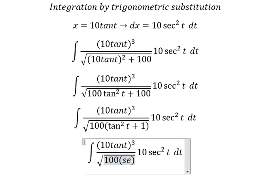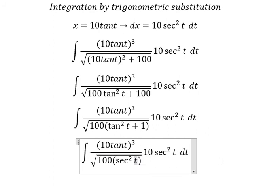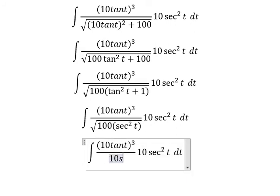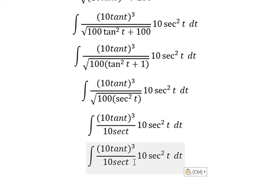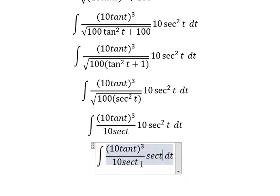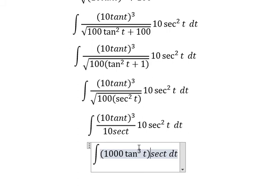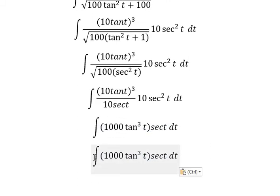Inside we have sec²(t). The square root of 100 sec²(t) gives us 10 sec(t). Now we simplify 10 sec(t) on the numerator and denominator. After simplification, this becomes 10 sec³(t). I can put the constant 1000 outside the integral.